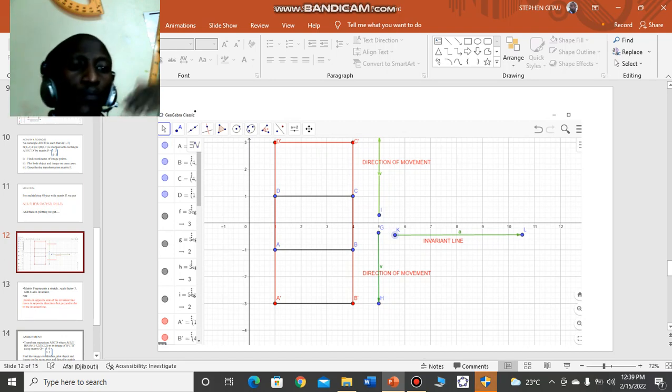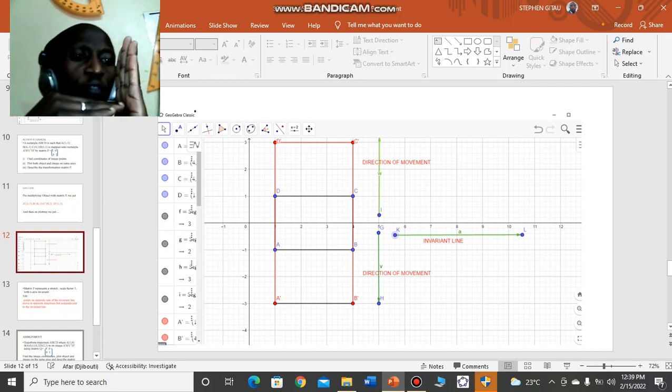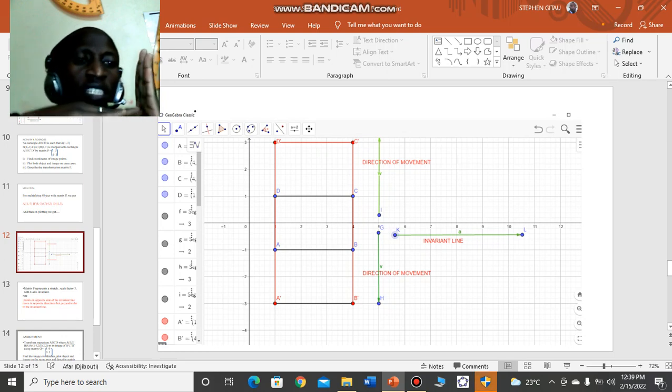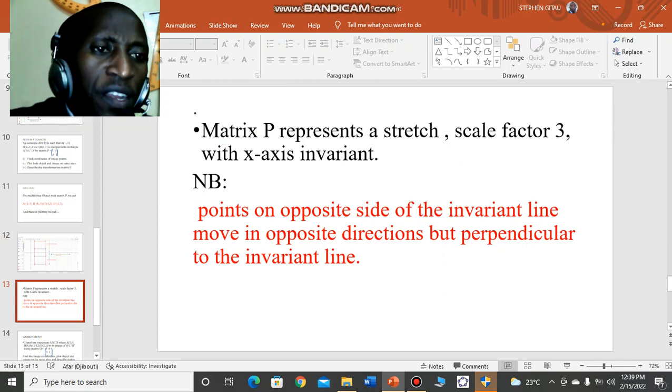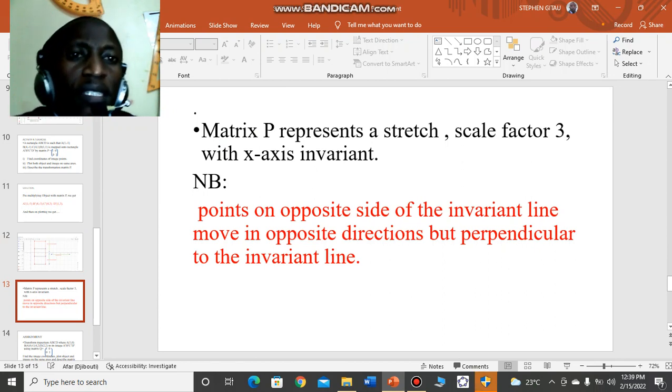So we see, as the invariant line is horizontal, the direction of movement is perpendicular to the invariant line, that is at 90 degrees to the invariant line. This is what we are saying: that matrix P is a stretch, scale factor 3, with x-axis invariant. I want to believe that we can calculate the scale factor 3.